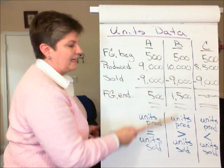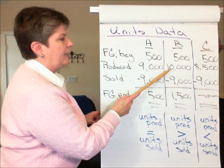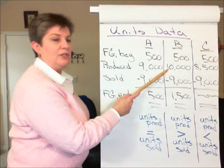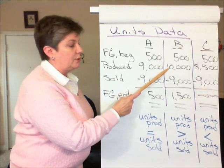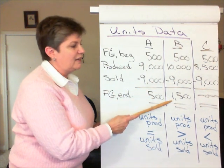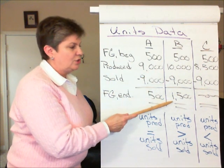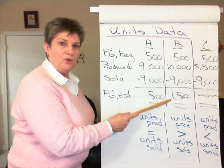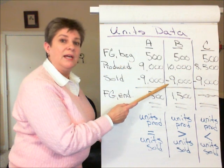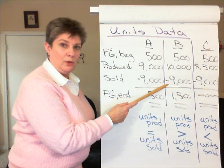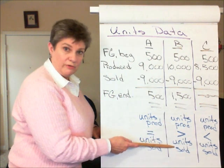In Scenario B, we have a different relationship between units produced and units sold. We produce 10,000 units and sell the same 9,000 units. Since we produced more units than we sold, inventory increased from the beginning period of 500 units to the end of the period at 1,500 units. That 1,000 unit increase is the difference between units produced and units sold.